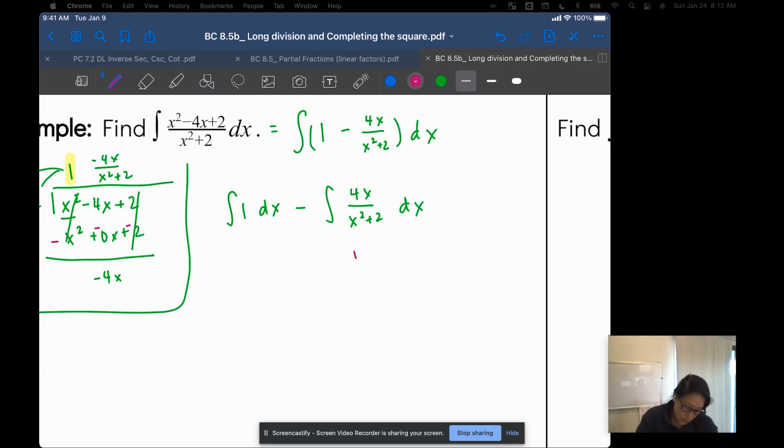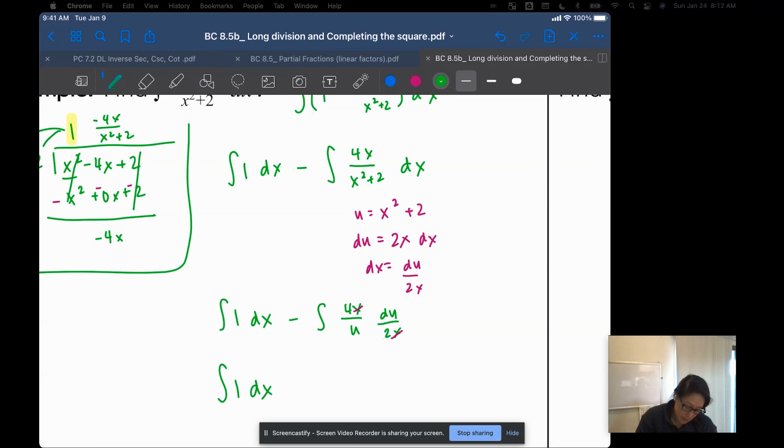Alright, so for the second integral, I am going to make the denominator x squared plus 2 equal to u. I get du is equal to the derivative of 2x dx, so dx is equal to du over 2x. I get the integral of 1 dx minus 4x over u du over 2x. My x's cancel.